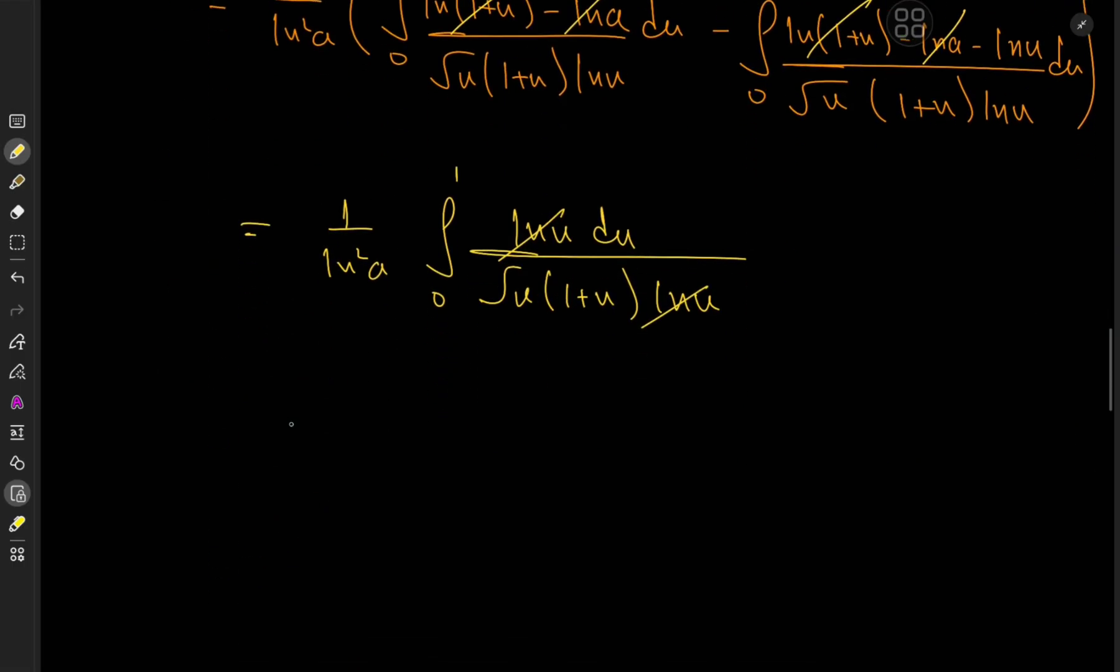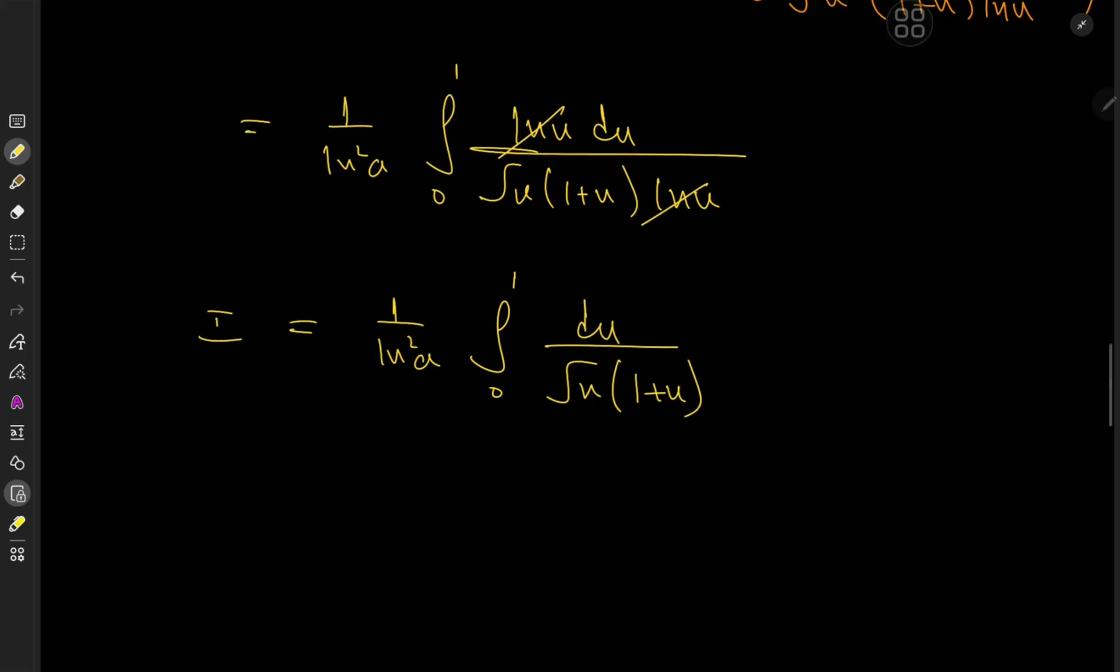So after all of that satisfying work, we have 1 over log squared a integral 0 to 1 du over root u times (1 + u), which is dope, I guess, because we can solve this via another elementary substitution. Like I said, feeling elementary today.